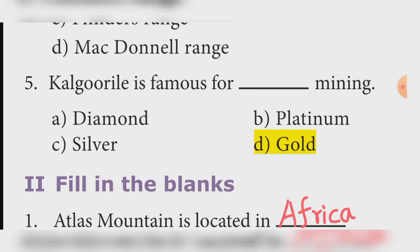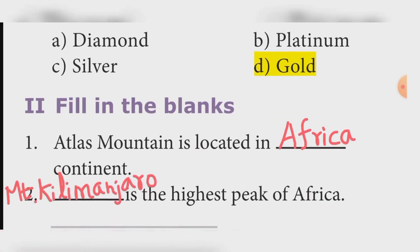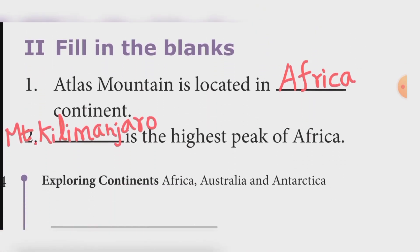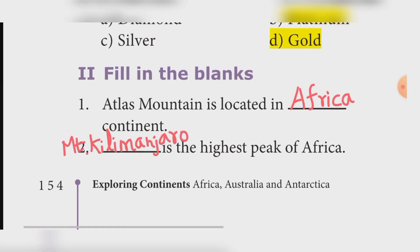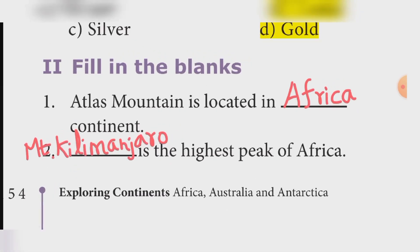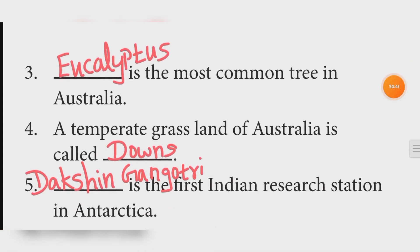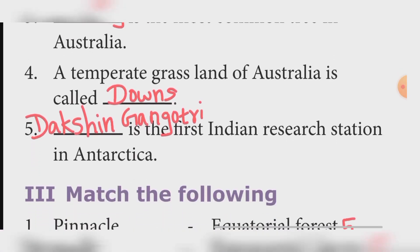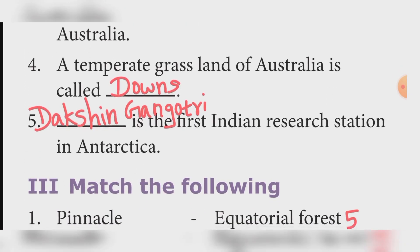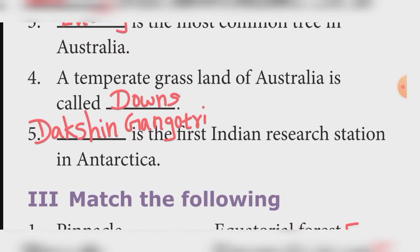Fill in the blanks. Atlas Mountain is located in Africa. Mount Kilimanjaro is the highest peak of Africa. Eucalyptus is the most common tree in Australia. The temperate grassland of Australia is called Downs. The first Indian research station in Antarctica is Dakshin Gangotri.